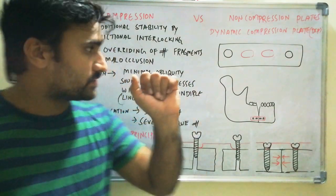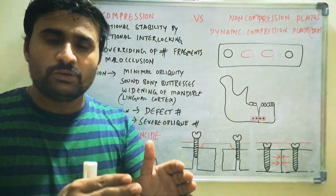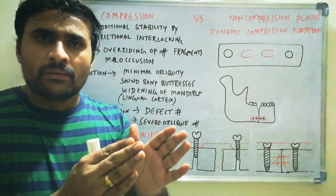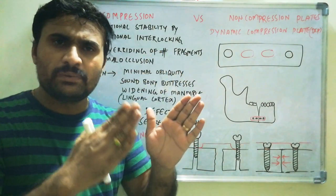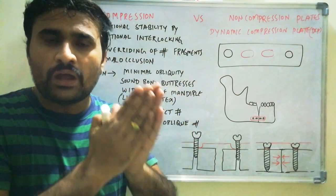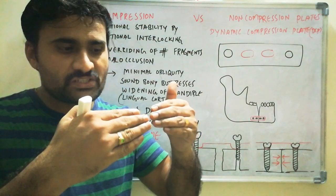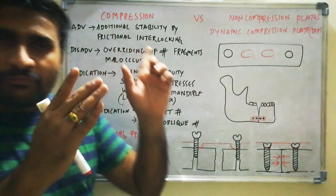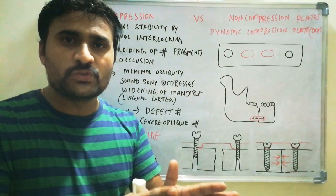Compression plates come under rigid type of fixation. The disadvantage is overriding of the fractured fragments, especially if you fail to adapt the plate to the underlying bone. The main precautionary measure is that there must be precise adaptation of the plate to the underlying bone. If there is no adaptation, it will produce overriding of the fractured fragments — instead of staying in line, they become overridden. After overriding, it will produce malocclusion, either intraoperatively or postoperatively.